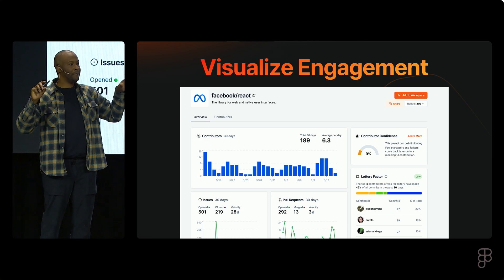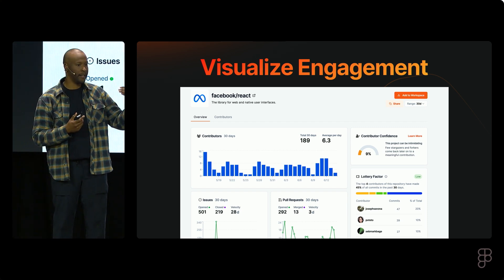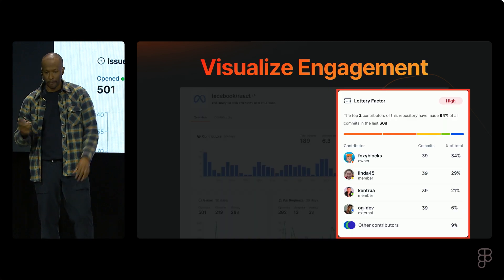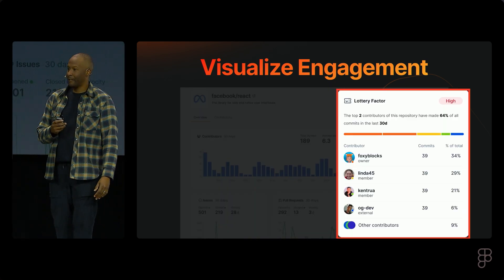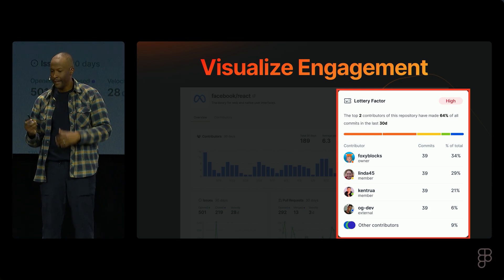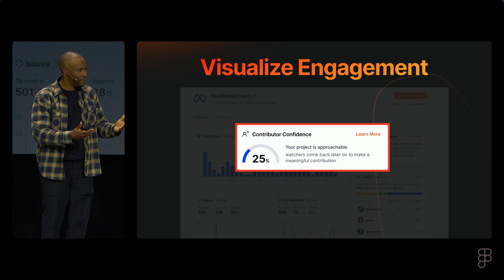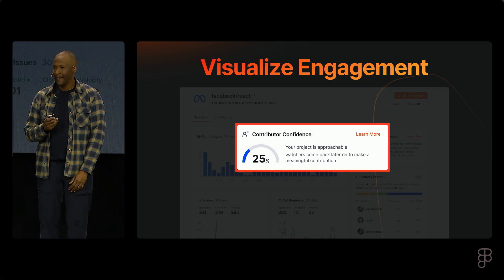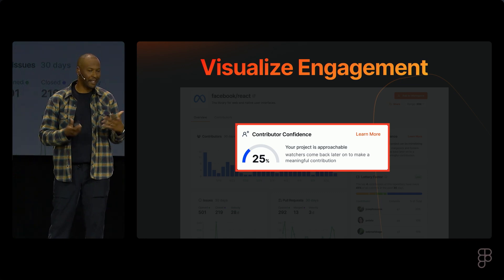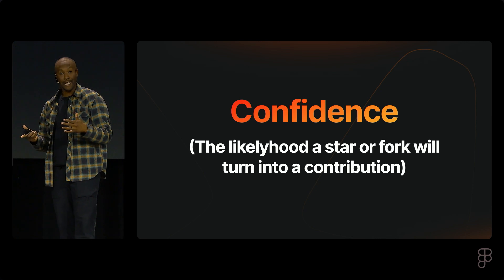We summarized those last slides into visualizing engagement — we call this the repo page. We didn't want to rebuild GitHub, but we wanted to add more context to what GitHub doesn't have. The story being: lottery factor — the chances that somebody winning the lottery won't come back to work on this codebase. If more than two people hit the lottery factor, that's going to be pretty high. And confidence — the likelihood that a star or engagement will turn into a contribution, like a walk score of 90 meaning you can get your groceries without a car.